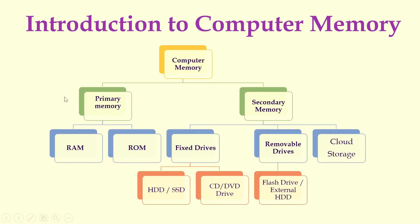So now we are going to see the computer memory hierarchy. Computer memory can be divided into two types, namely primary memory and secondary memory. In primary memory, there are two types: RAM, random access memory, and ROM, read-only memory. In secondary memory, we have fixed drives, removable drives, and cloud storage.